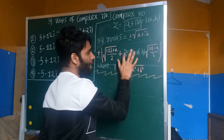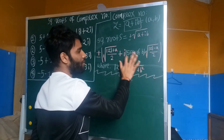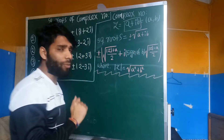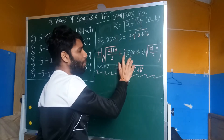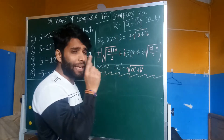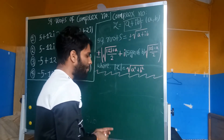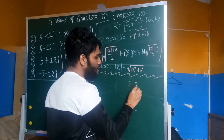Then plus i — i meaning imaginary number — and root into sign of b. Sign of b means: if b is positive then take plus, if b is negative then take minus. For example, if we have 2 minus 3i.